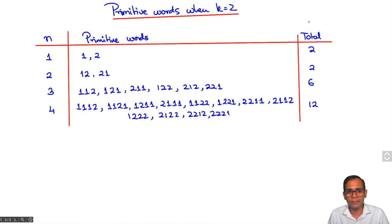The words 1,1,1 and 2,2,2 are not primitive. When n equals 4, things get a little more interesting. There are of course the words 1,1,1,1 and 2,2,2,2 which are not primitive, but there are also the words 1,2,1,2 and 2,1,2,1 which are not primitive. So out of 16 words, four are not primitive and the remaining 12 are primitive.